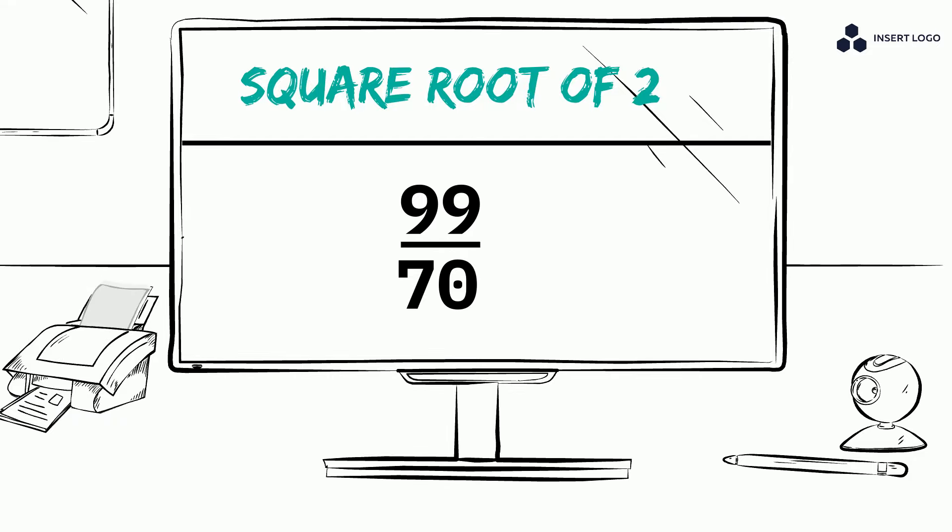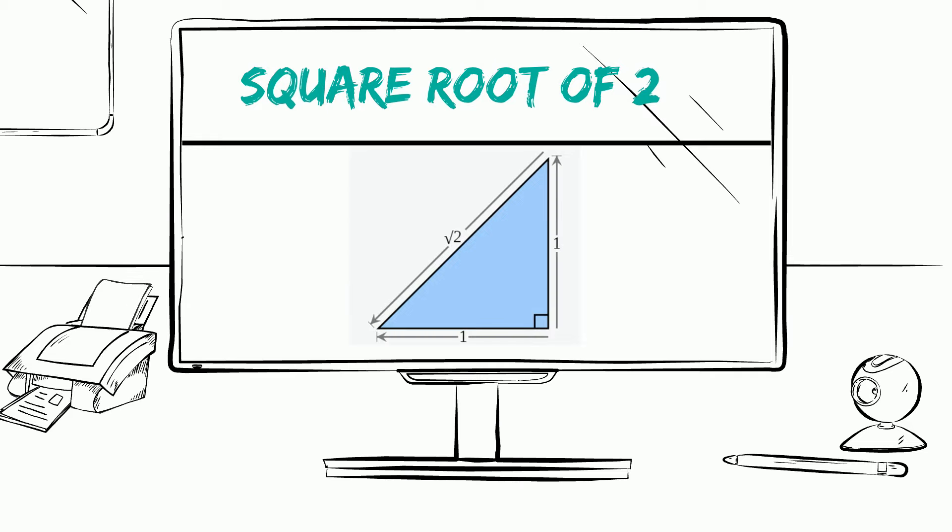The square root of 2 is also equal to the length of the hypotenuse of an isosceles right triangle with the legs with a length of 1.